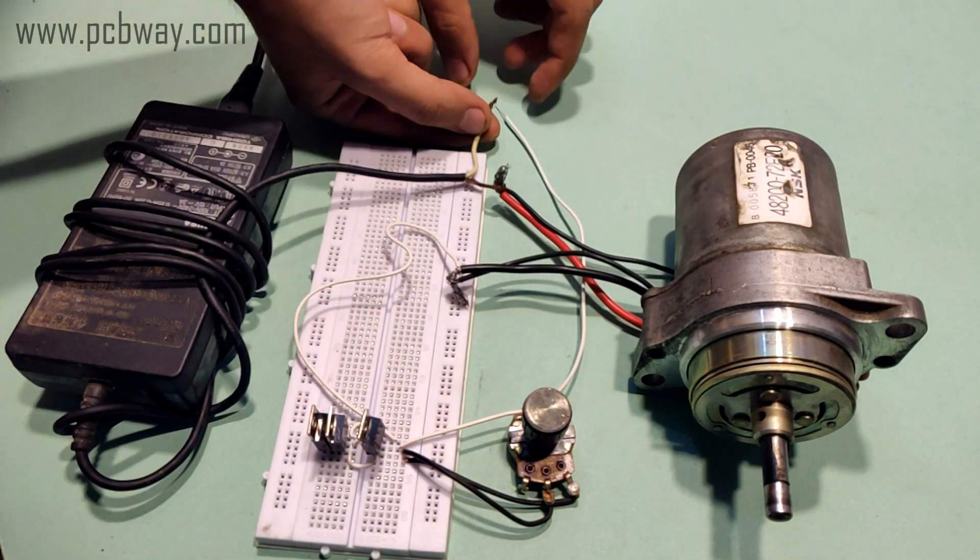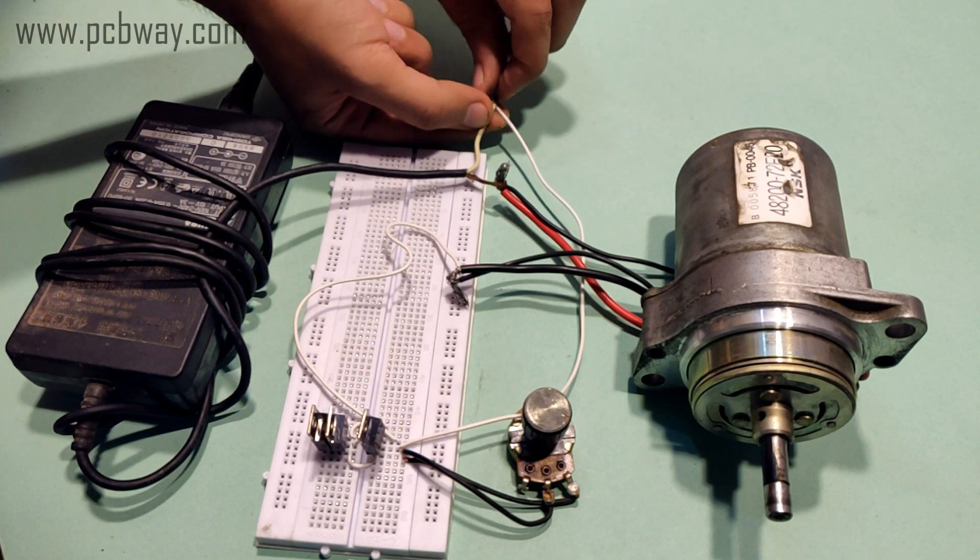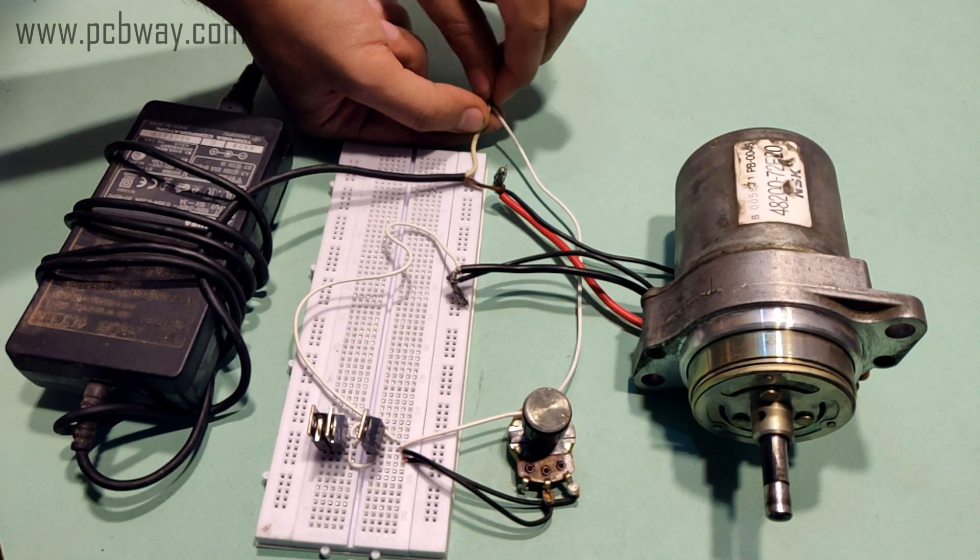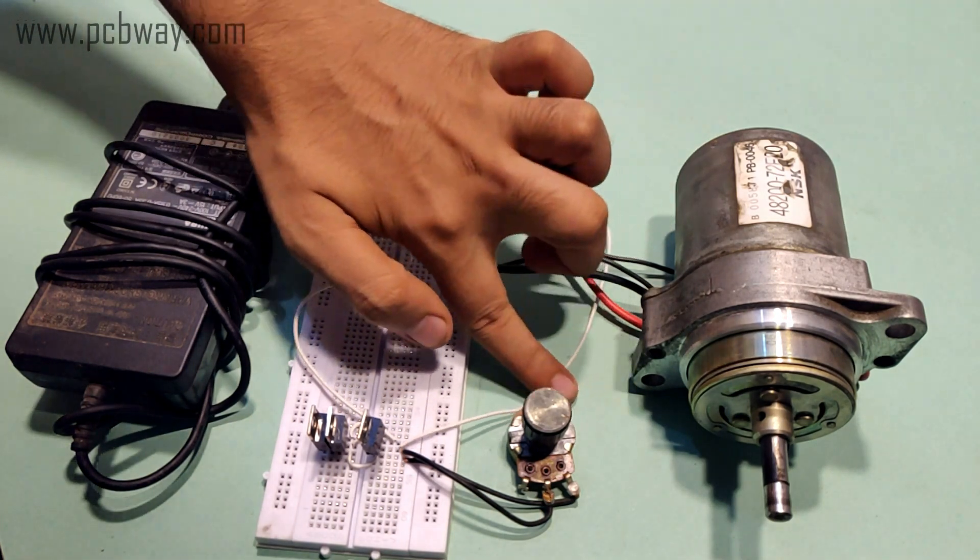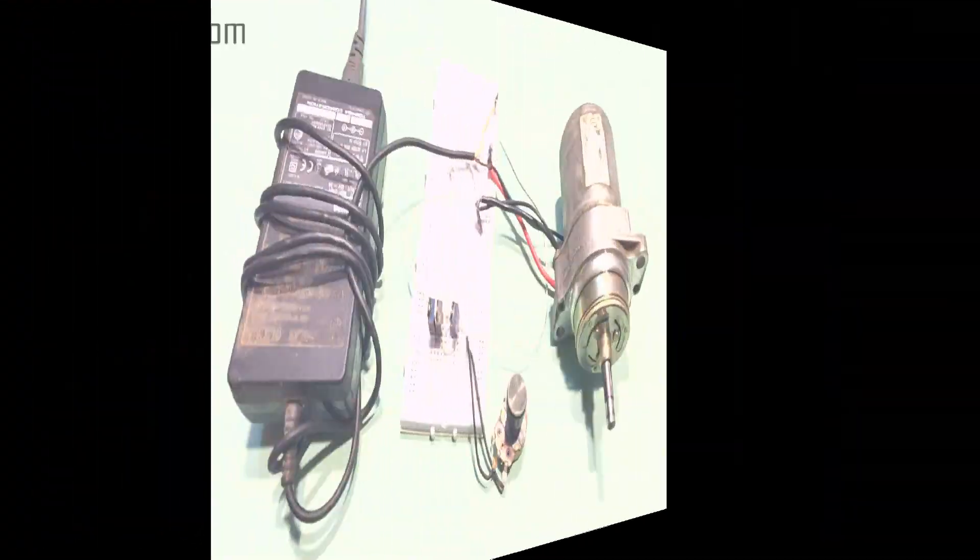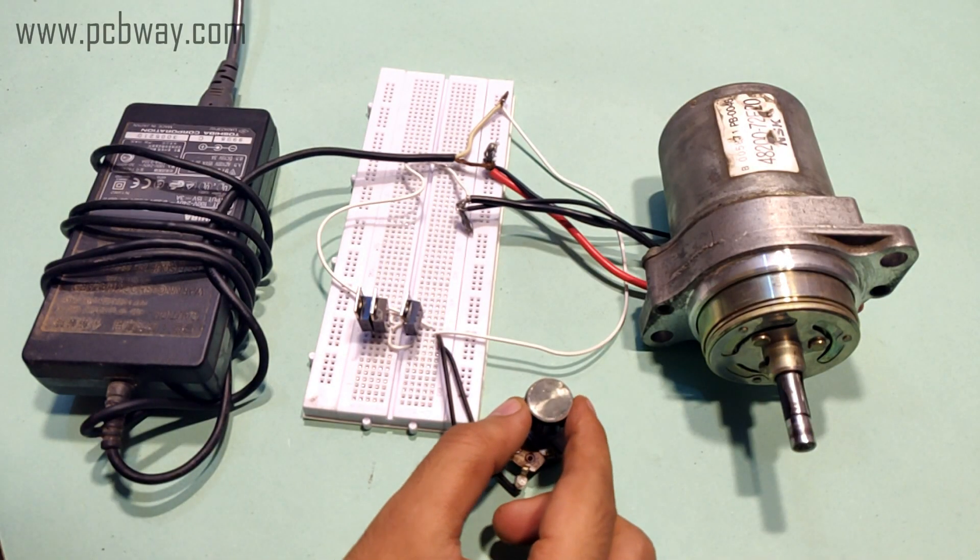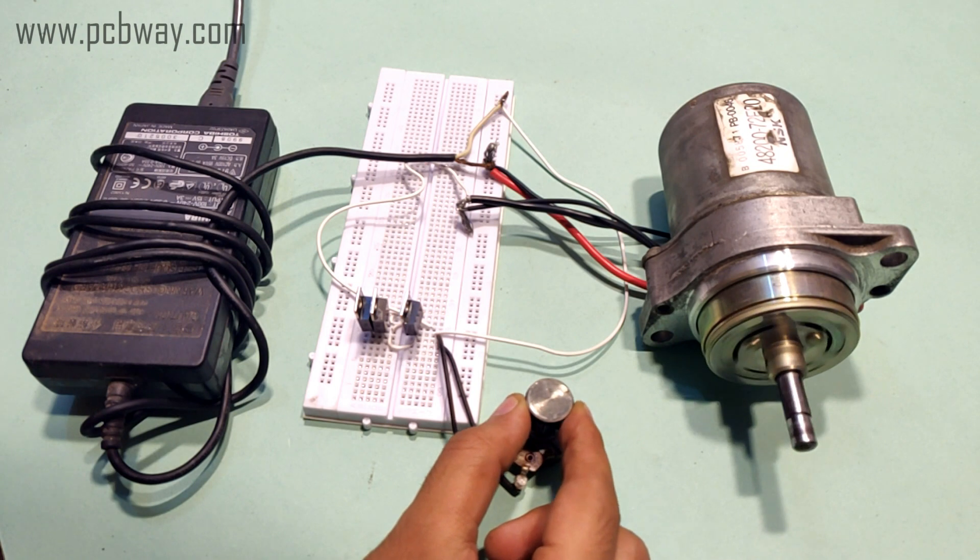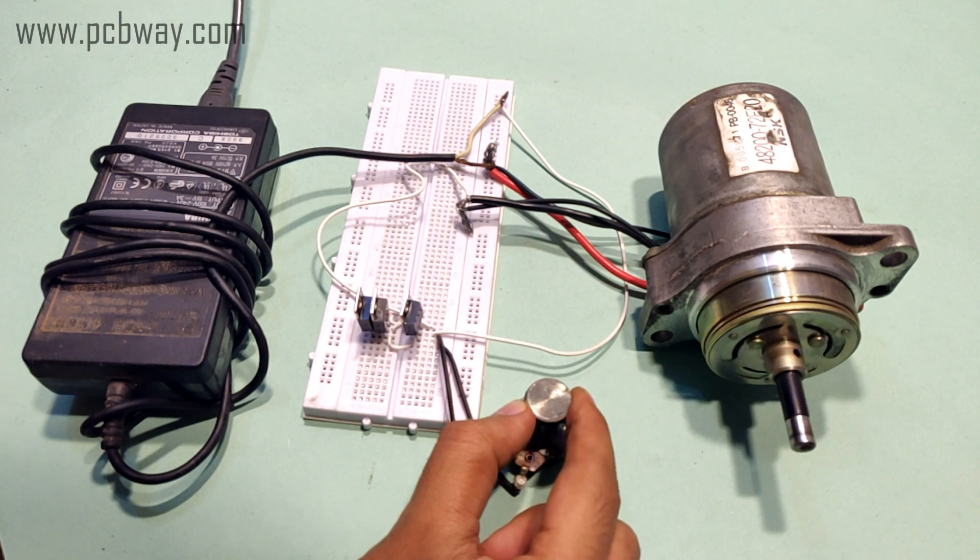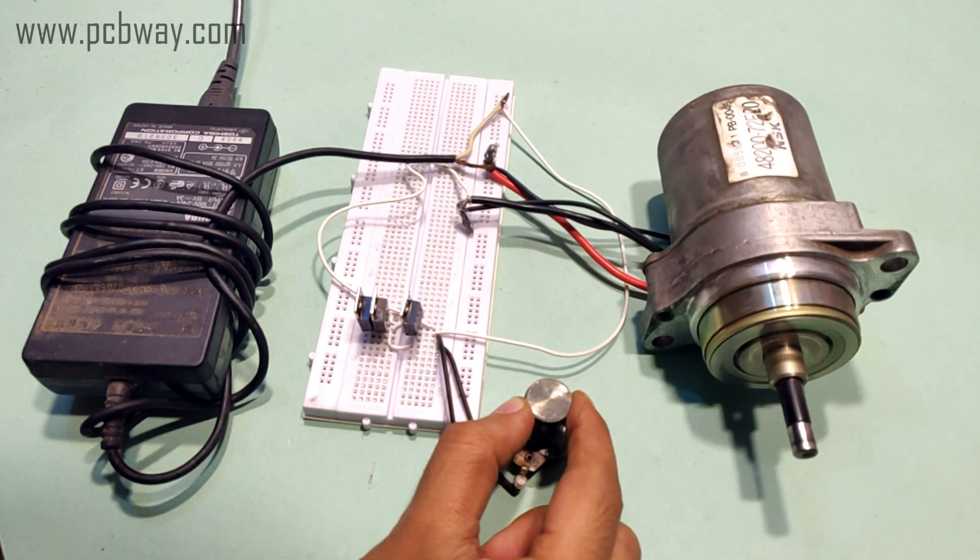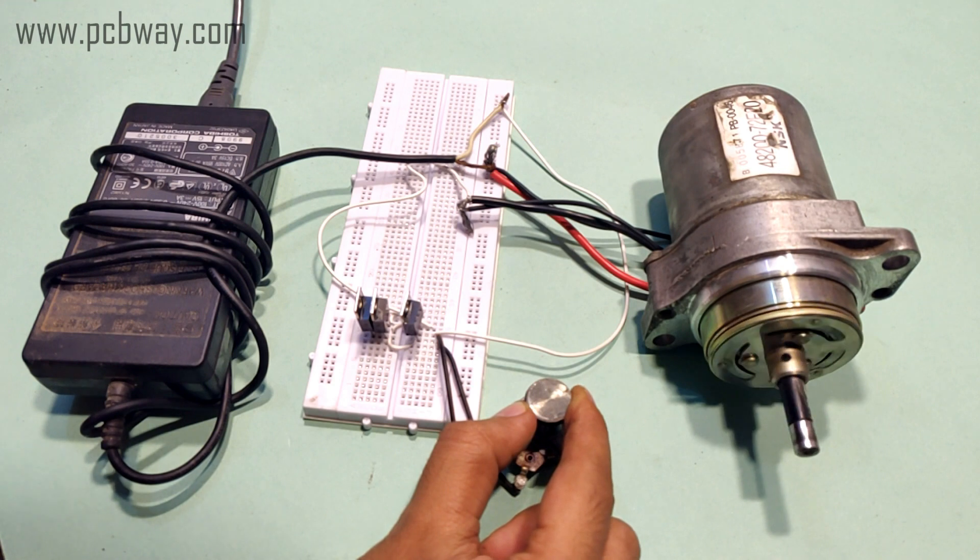Now connect the collector terminal of the power transistor to the positive DC supply from the laptop charger and the emitter terminal to any terminal of the DC motor. Start rotating the knob of the variable resistor in the clockwise direction. You should see the DC motor slowly pick up speed. As you move the knob more clockwise, the speed increases until it attains full speed. Notice the speed precision - how low the speed of the DC motor can get.